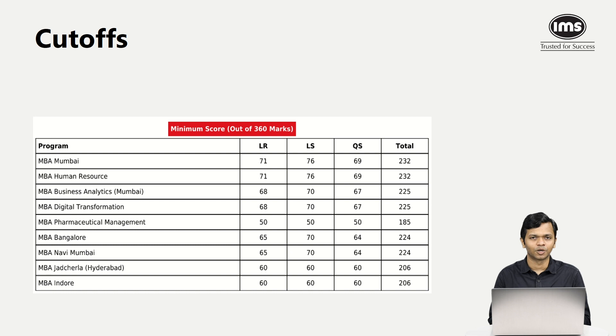Lastly, let's talk about the cutoffs. What I'm showing you on screen is the cutoff from last year for NMIMS for various campuses. Now if you look at the Mumbai campus, the cutoff was 232, the sectional was 71, 76, and 69. If you look at the reported difficulty of the individual sections this year, we don't see a lot of changes in terms of the sectional or the overall cutoff that was there.